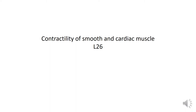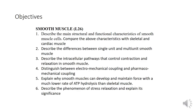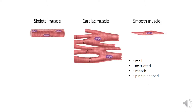In this lecture, we will cover the mechanisms of contraction of smooth muscle and cardiac muscle. We previously covered the histological appearance of skeletal, cardiac, and smooth muscle. Skeletal muscle and cardiac muscle are striated, with cardiac muscle also showing intercalated discs and branching fibers. Today, we are going to cover smooth muscles.